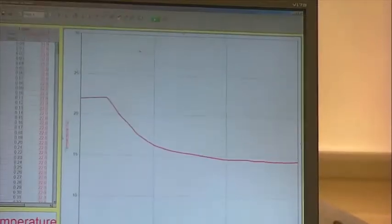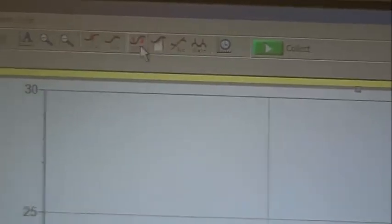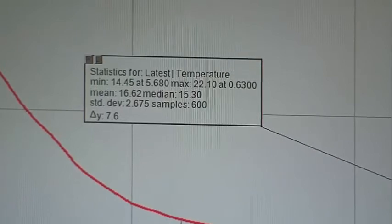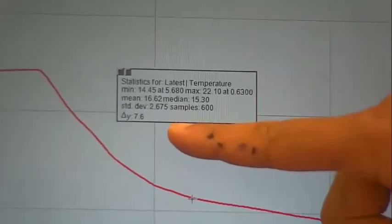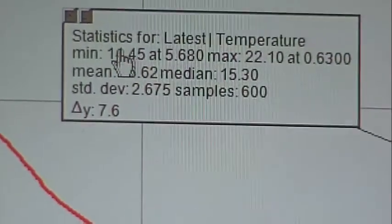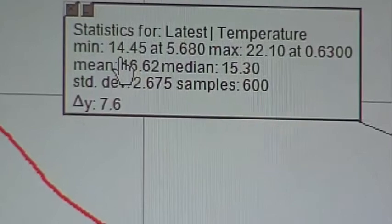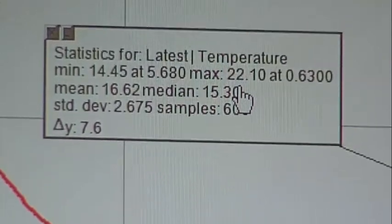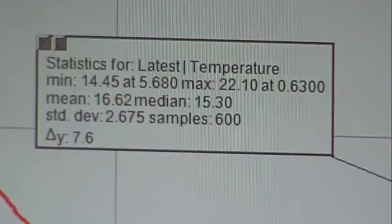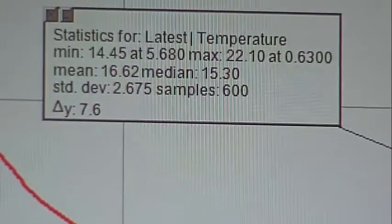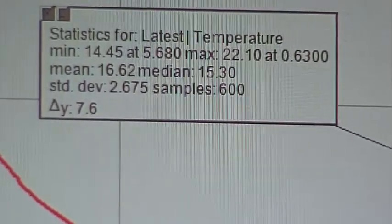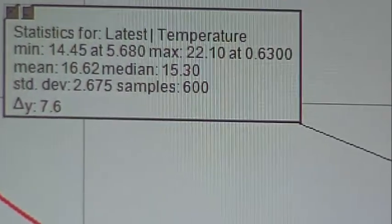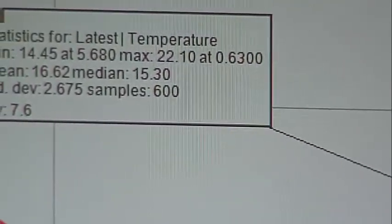In order to get our minimum and maximum temperatures, we will go to this button here called STAT, click on it. We get this box, we can move it around, make it bigger, make it smaller. And what we are interested in are two values. This is ethanol now. We're interested in our minimum temperature, 14.45 degrees, and our maximum temperature, which is 22.10. So our maximum temperature was 22.1 degrees, our minimum temperature where this has equilibrated with the outside environment is 14.45 degrees.